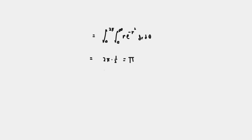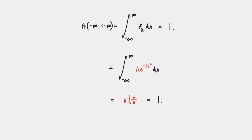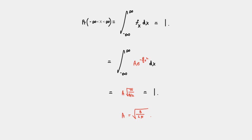Doing this and then multiplying by the 2π we get from theta, we get that this expression is equal to π. And if we remember from earlier, this is the square of the integral we wanted, so our original integral is equal to the square root of π. So now if we go all the way back to our original problem, which was integrating this function with constants, we get the relationship between the coefficients that a equals 1/2 times the square root of b over π.